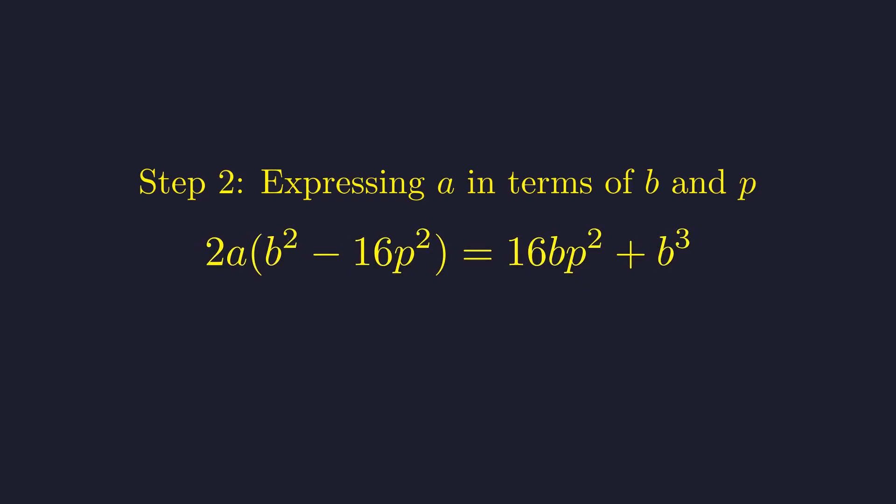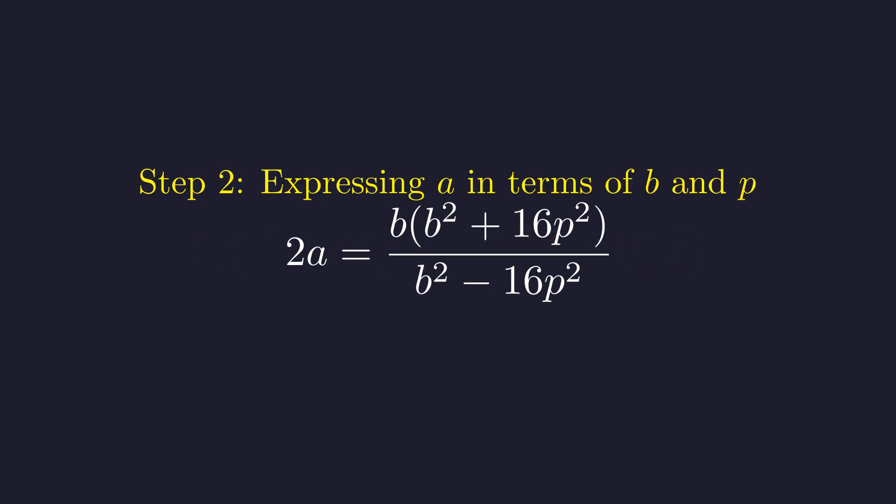And on the right, we can pull out b. Look at that. Factoring reveals some nice structure. To isolate a, we divide by this quantity b squared minus 16p squared. This is the key expression we need to understand.